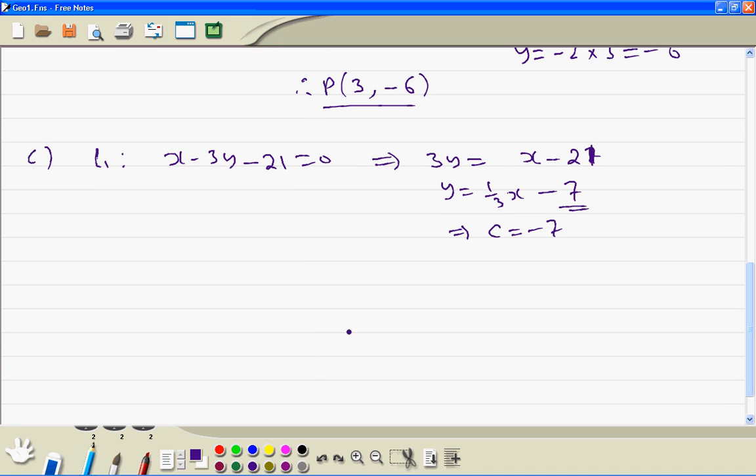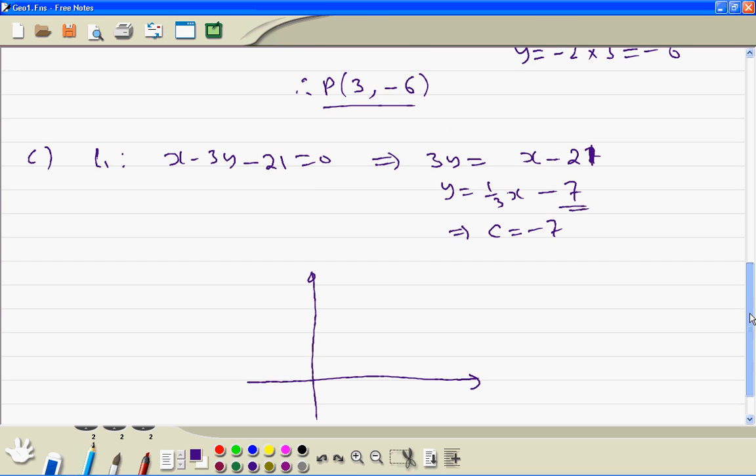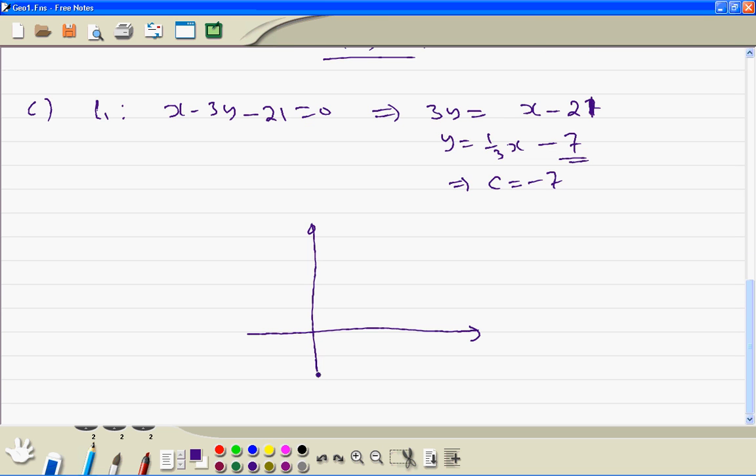Now we draw the triangle. So the point P is 3 minus 6, and the point C, this is minus 7.